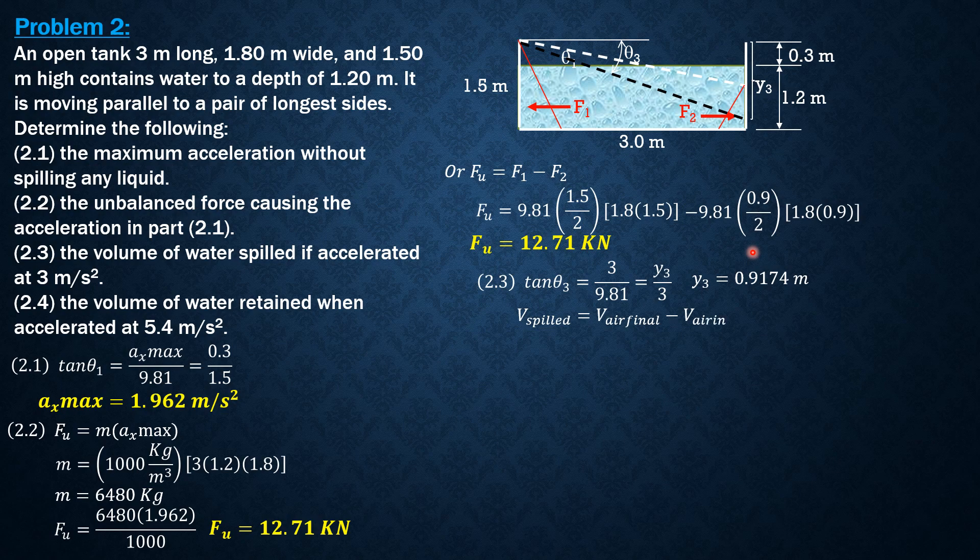Volume spilled is volume of air final minus initial, where the final volume of air is this triangular wedge, which is 1 half of 3 times Y3 times 1.8, while the initial volume of air is 3 by 0.3 by 1.8. So volume spilled equals 0.857 cubic meters.